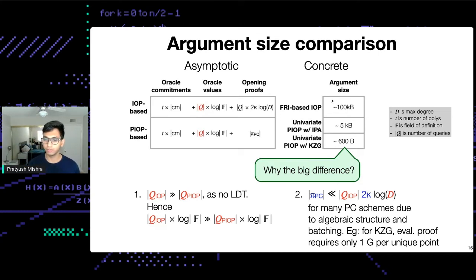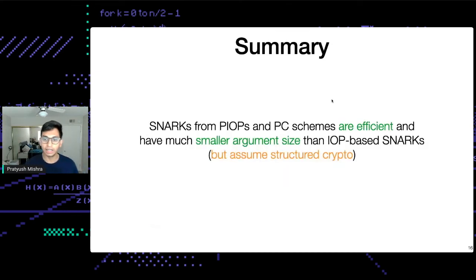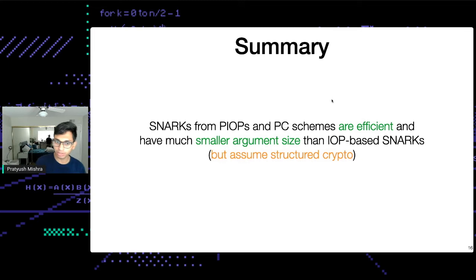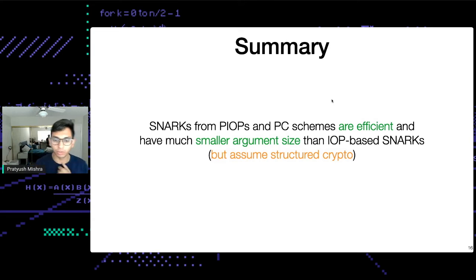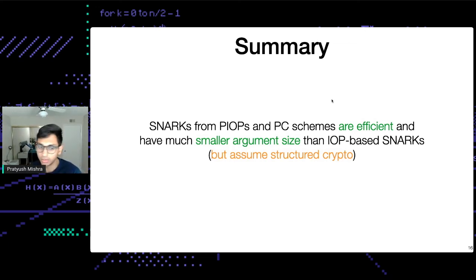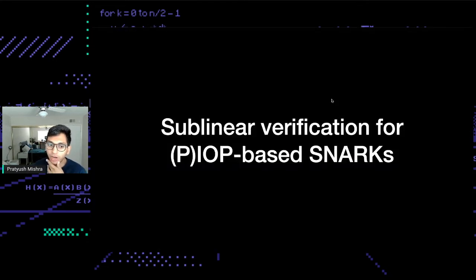Both factors together result in this massive difference in proof size. Our final construction has achieved what we set out to do: get a SNARK with a smaller proof size. We've seen how to construct SNARKs from polynomial IOPs and PC schemes — these are efficient and have much smaller argument sizes than IOP-based SNARKs. On the downside, they rely on more structured cryptography such as pairings and discrete logs, which tend to not be quantum resistant.